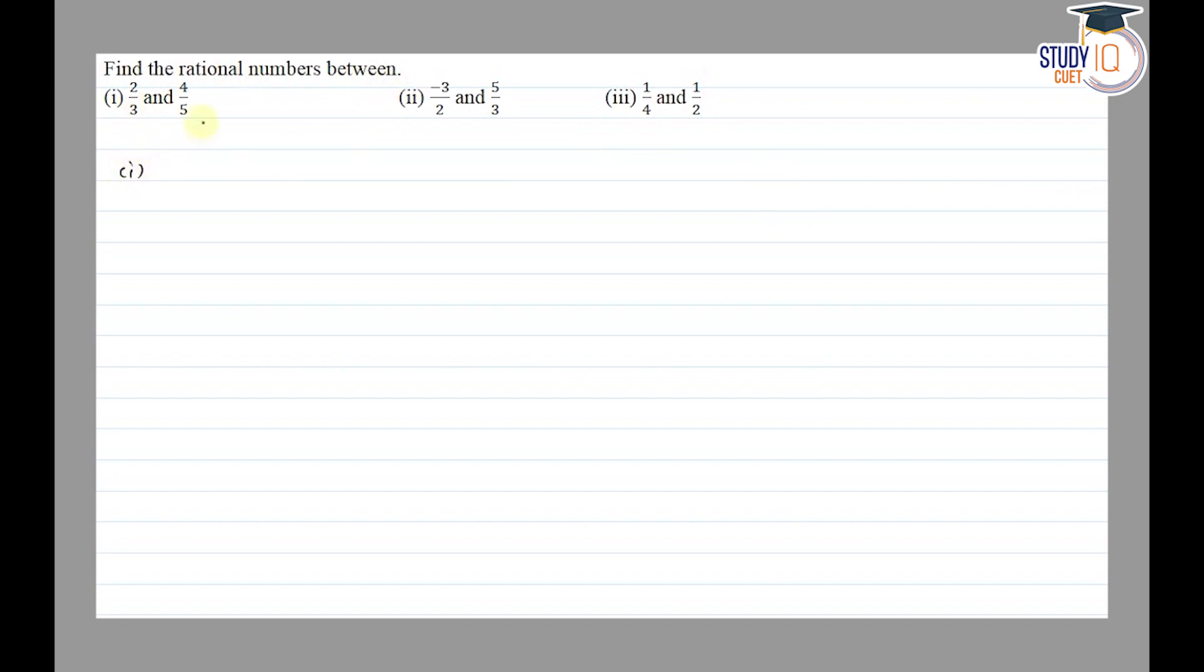First, 2/3 and 4/5. So 2/3, we can take as 2 won't completely divide, it's 0.66. And 4/5 we can take as 0.8. So we need to find rational numbers between them. The rational numbers between them will be around 0...